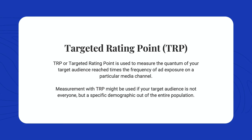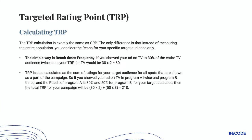How do you calculate TRP? It's exactly the same as GRP — the only difference is that instead of measuring the entire population, you consider the reach for your specific target audience only. The simple way is to multiply reach by frequency. TRP is also calculated as the sum of ratings for your target audience for all spots shown as part of the campaign. So if you showed your ad in program A twice and program B three times, and the reach of program A is 30% and program B is 50% for your target audience, then the total TRP will be 30×2 + 50×3, which equals 210.